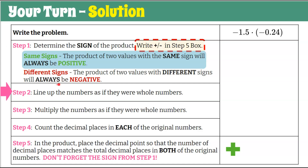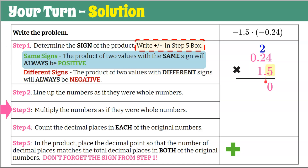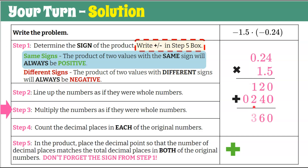Step two: line up the values. Put 0.24 on top because it goes to the hundredths and our other number only goes to the tenths. Step three: multiply as whole numbers, starting with the 5. Five times four is 20 — 0, carry the 2. Five times two is 10 plus 2 is 12 — 2, carry the 1. Five times zero is 0 plus 1 is 1. Second row: zero placeholder. One times four is four; one times two is two; one times zero is zero. Now add: 0 plus 0 is 0; 2 plus 4 is 6; 1 plus 2 is 3; and then we have that zero.